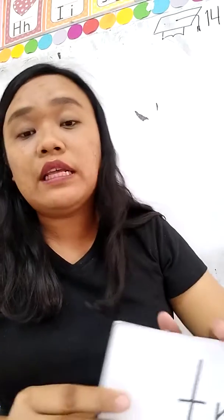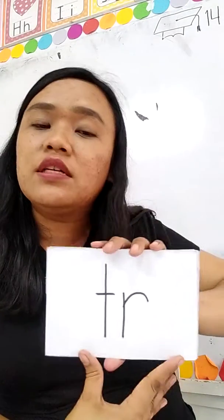Ang sunod naman nating pag-aaralan ay ang mga kambal katinig. Actually, itong kambal katinig na pag-aaralan natin sa reading last quarter. Sa English, ang tawag dito ay blends — consonant blends. Pero pag-aaralan lang ulit natin pang-review, tapos mga Tagalog naman na words yung gagamitin natin. Tayo ay nasa page 254.